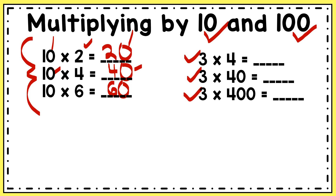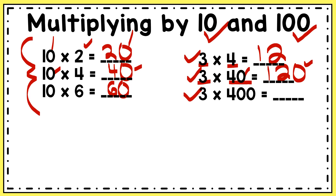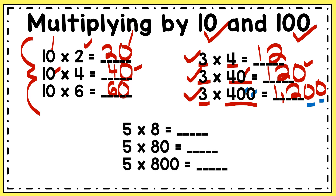Let's look at some other examples. You have 3 times 4, 3 times 40, and 3 times 400. The basic fact here is 3 times 4, and I know that's 12. 3 times 40 is 120 — one of my factors ends in a 0, so my answer will end in a 0. And 3 times 400 is 1,200 — 400 ends in two zeros, so my answer ends in two zeros.